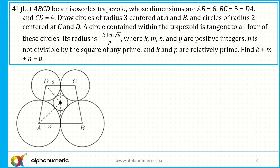Let ABCD be an isosceles trapezoid with AB equals 6, BC equals 5, CD equals 4, and DA equals 5. Draw circles of radius 3 centered at A and D, and circles of radius 2 centered at B and C. A circle contained within the trapezoid is tangent to all four of these circles — we need to find its radius R.